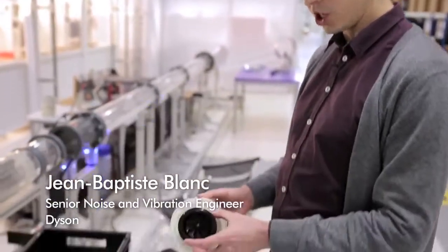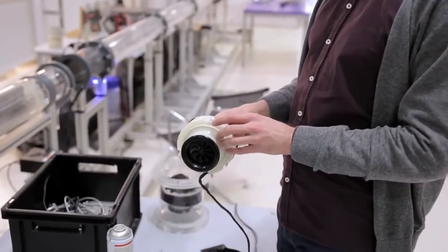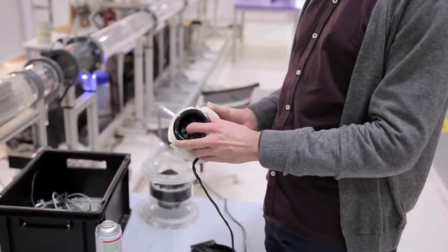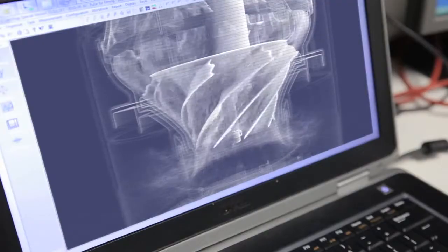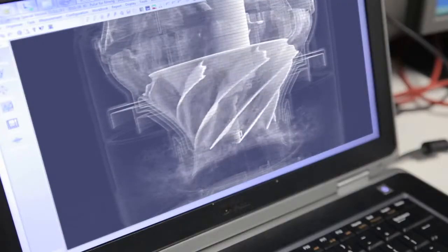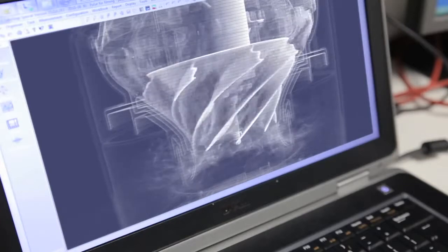So this is the motor bucket that we designed to generate the primary airflow in a machine. It houses a brushless motor to which this impeller is connected here. So the impeller is the part which is generating the airflow in the product when it is being spun by the motor.